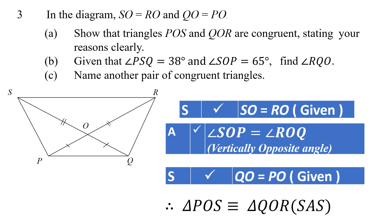Let's look at one more question — also an O-level question. We are given SO equals RO and QO equals PO, as indicated in the diagram. We need to show that triangles POS and QOR are congruent. That's straightforward: SO equals RO is given, QO equals PO is given, and angle SOP equals angle ROQ using the vertically opposite angles property. Therefore we can conclude the triangles are congruent using SAS.